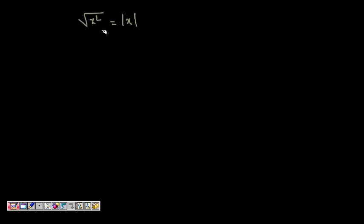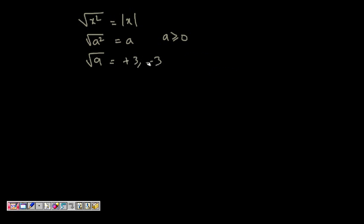We can write √(x²) as |x|, because for the square root we take the non-negative root. So √(x²) = |x|. We can only write √(a²) = a if we already know that a is greater than or equal to 0, because a² = 9 can come from both 3 and -3. To make square root a function, we take the non-negative value, which is the absolute value.